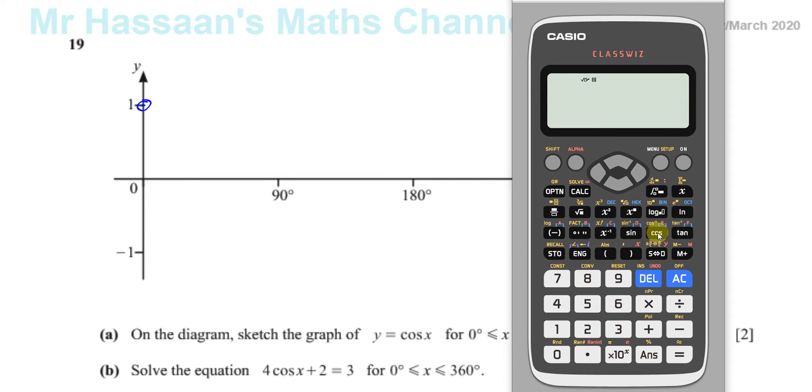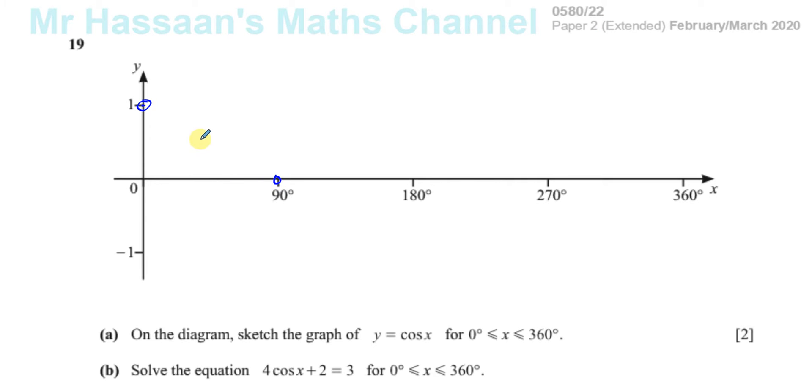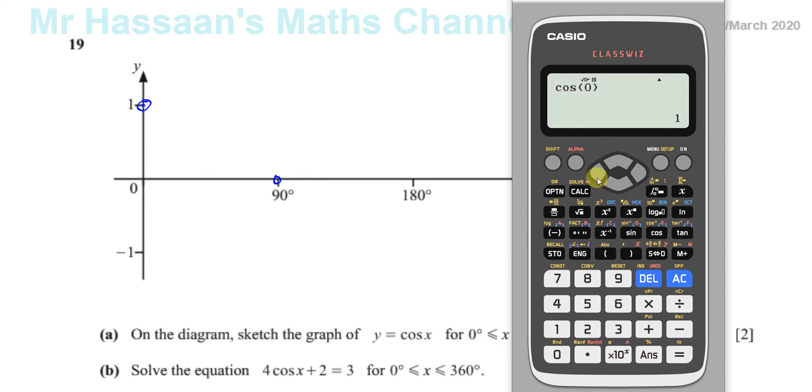Then you proceed. Cosine of 0° is equal to 1. Just in case you forgot, you can make sure if you get confused. Then go to 90 degrees. If you want, you can even go to 45° and see what it's going to be, but there's not a very good scale here. It's just a sketch they want. Then you can go to cosine of 90 degrees and see what you get there.